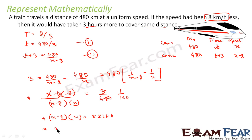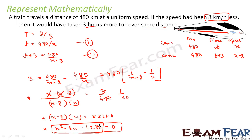Solving further, x squared minus 8x minus 1280 equals 0. This is also a quadratic equation. We have converted this real life scenario into a quadratic equation. This is a real life application of quadratic equations where you know distance and time relationships and want to find the actual speed. Here x is the initial speed of the train.